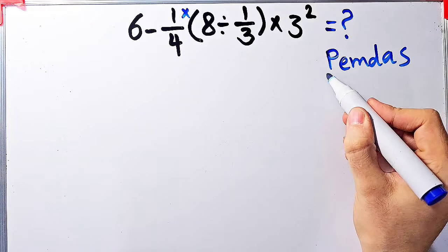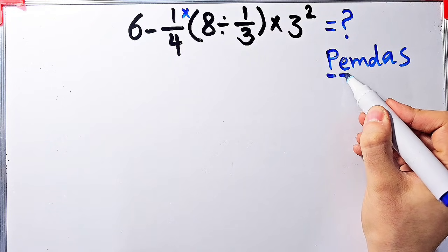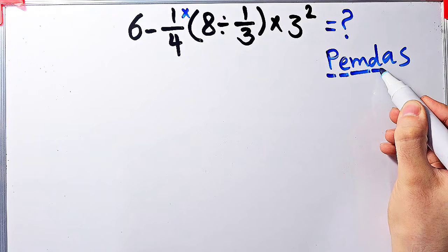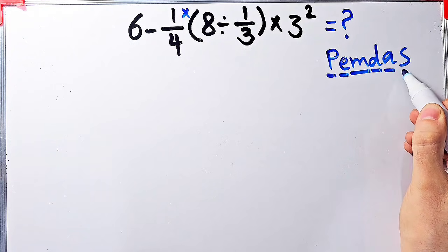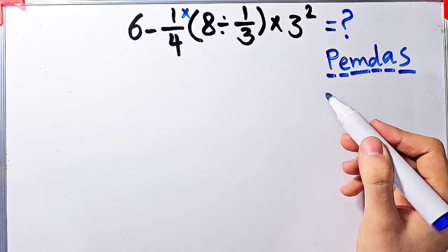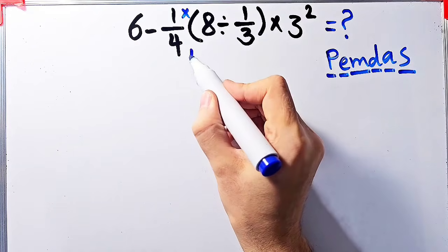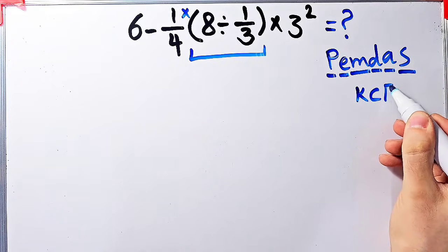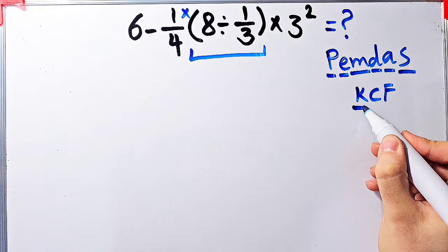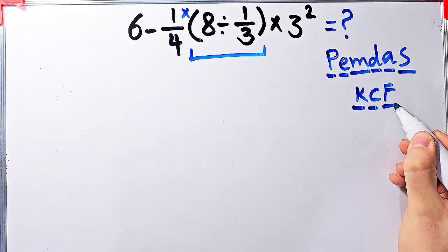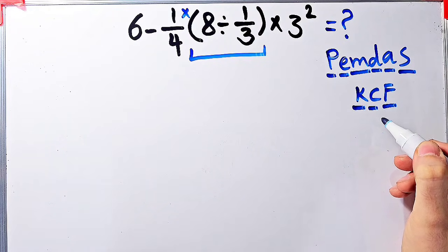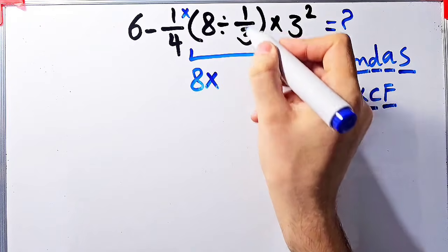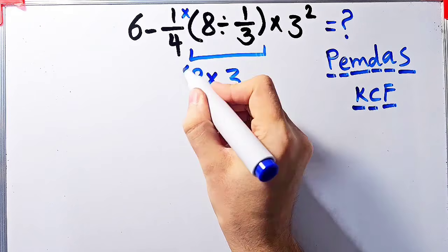In this rule, P stands for parenthesis, E stands for exponent, M stands for multiplication, D stands for division, A stands for addition, and S stands for subtraction. First we simplify the parenthesis. Inside these parentheses we have eight divided by one over three. To solve this part, we need to follow the KCF rule: K stands for keep, C stands for change, and F stands for flip. We keep the first number as it is, then we change the division sign to the multiplication sign, and after that we flip the second fraction.